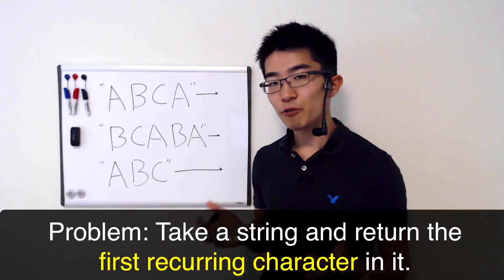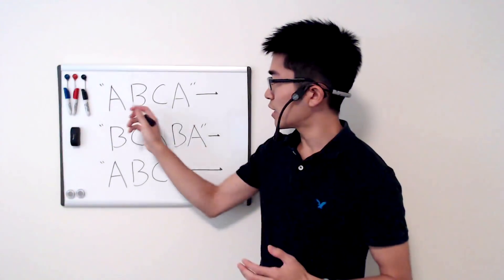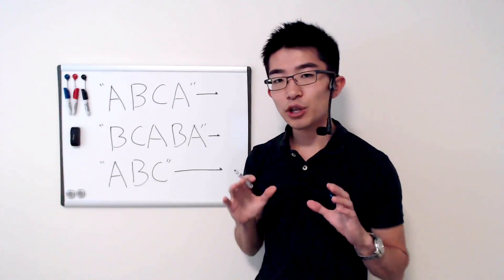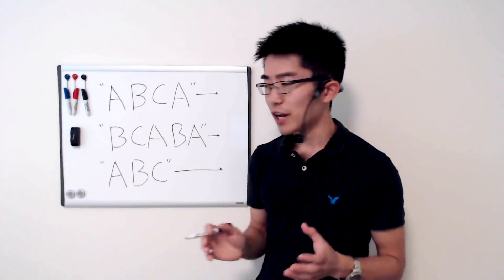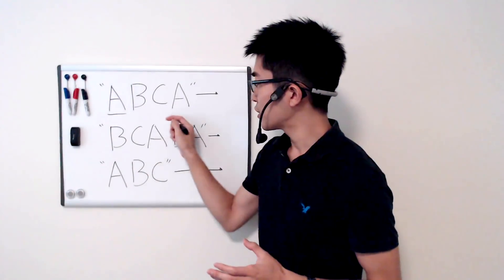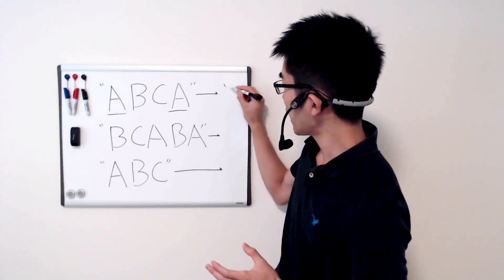For example, if you're given this string as the input — a, b, c, a — there's only one recurring character in the string, a, so your function should return a.